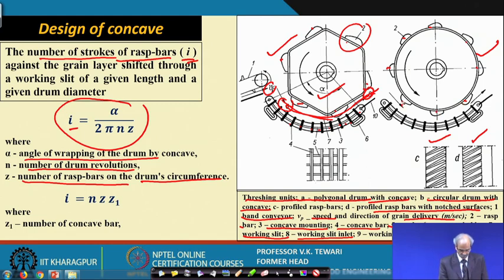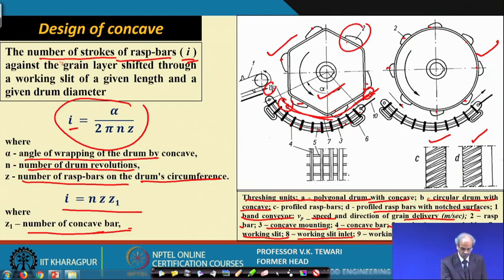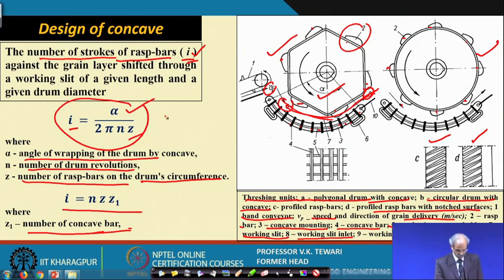i can also be expressed as n · z · z₁, where z₁ is the number of concave bars and z is the number of rasp bars on the drum's circumference. So the number of strokes of the rasp bar depends on the angle of wrap, the speed, the number of rasp bars, and the number of concave bars — this is important for further design.